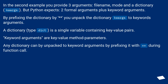A dictionary, type dict, is a single variable containing key-value pairs. Keyword arguments are key-value method parameters. Any dictionary can be unpacked to keyword arguments by prefixing it with ** during a function call.